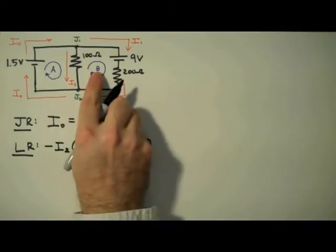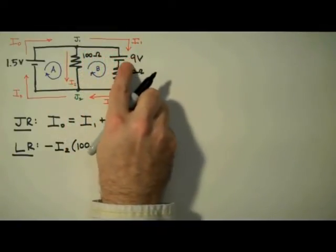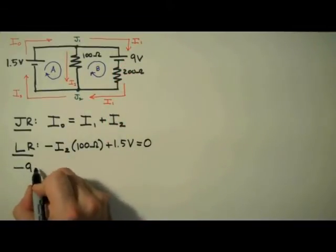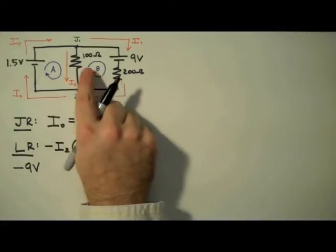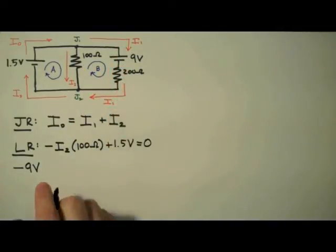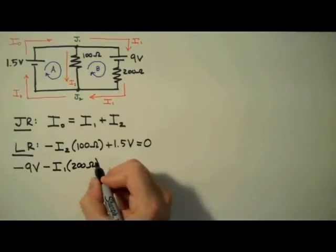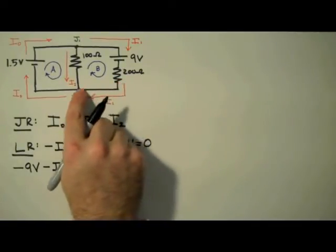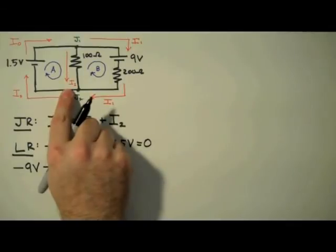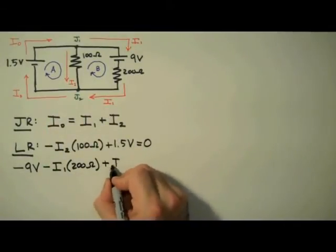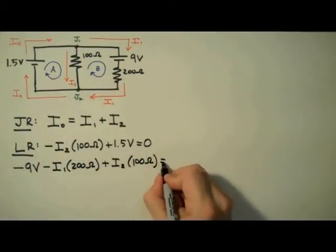Next we use the loop rule to analyze loop B. Starting again in the upper left hand corner, we travel clockwise until we get to the first component — a 9 volt battery. Traveling from high to low, that means a voltage drop, minus 9 volts. Continuing around loop B we get to the 200 ohm resistor. We're traveling clockwise, which is with the direction of I1, indicating a voltage drop, minus IR. So I write minus I1 times 200 ohms. Then we continue around loop B up the middle leg until we get to the 100 ohm resistor. Here we're traveling up the leg, whereas the current is traveling down. This is going to indicate a voltage lift, plus IR. So I write plus I2 times 100 ohms, complete loop B, and set this equal to 0.